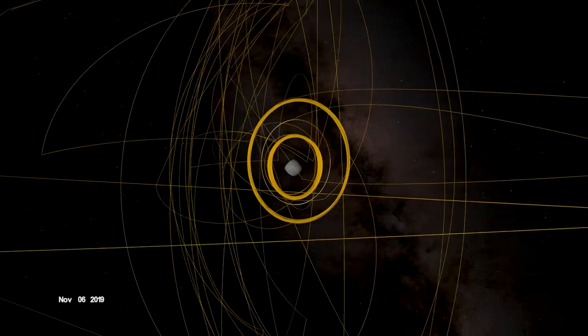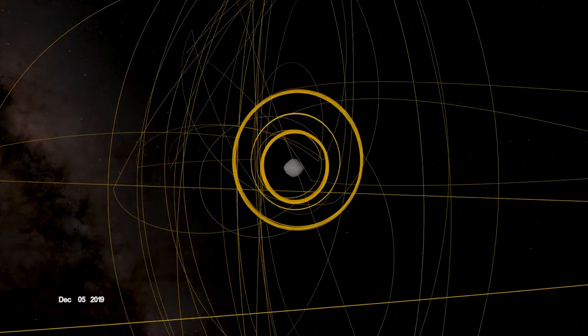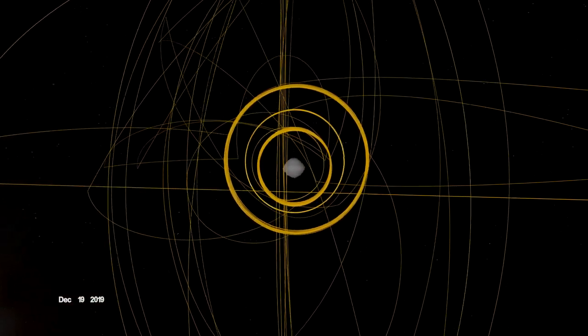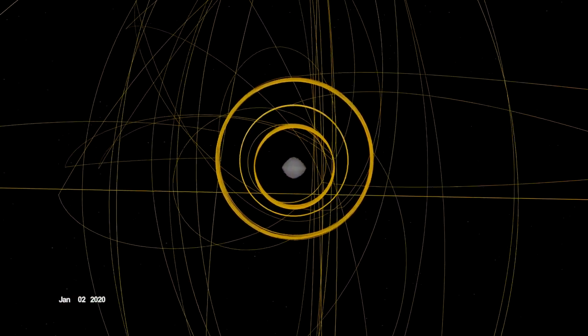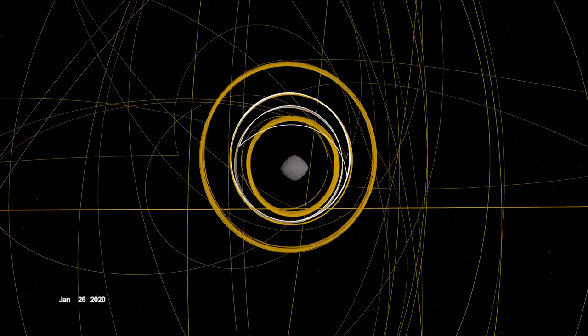OSIRIS-REx concluded its first year at Bennu back in orbit, circling the asteroid's terminator, or boundary, between day and night. Here, outside forces acting on the spacecraft are balanced, allowing it to orbit within the same plane over time.